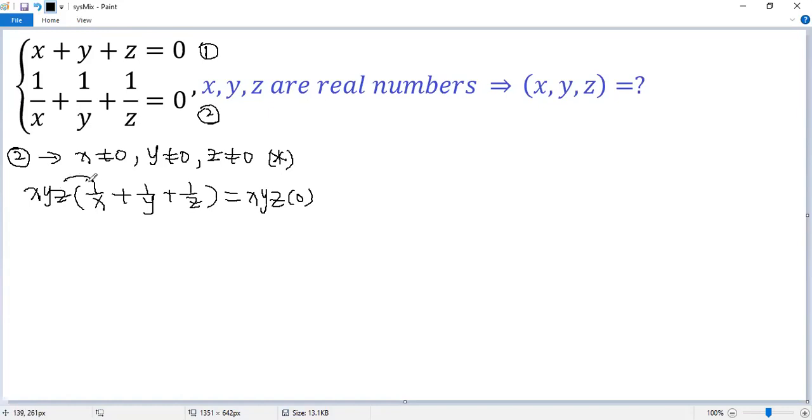We distribute this to the first. So cancel x, we get yz. The second term, cancel y, we get xz. The last term, cancel z, get xy equals 0. So we denote this as equation 3.